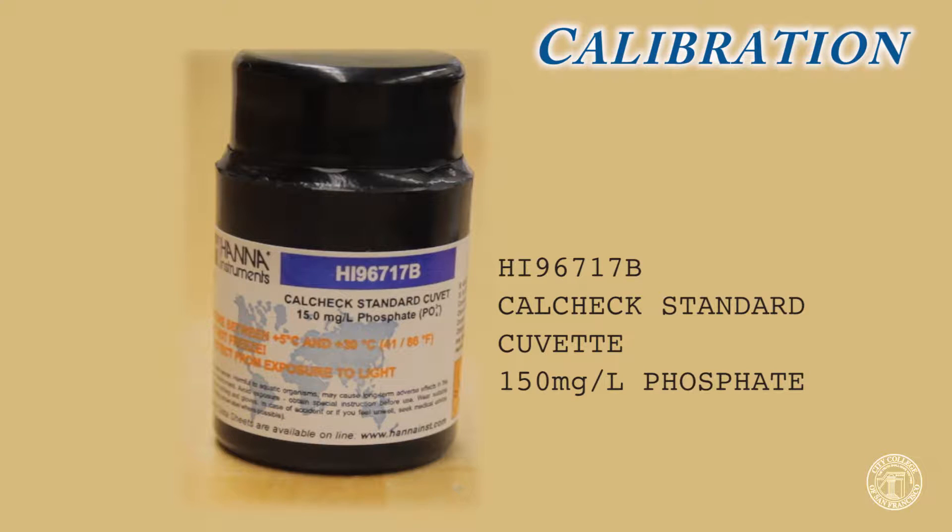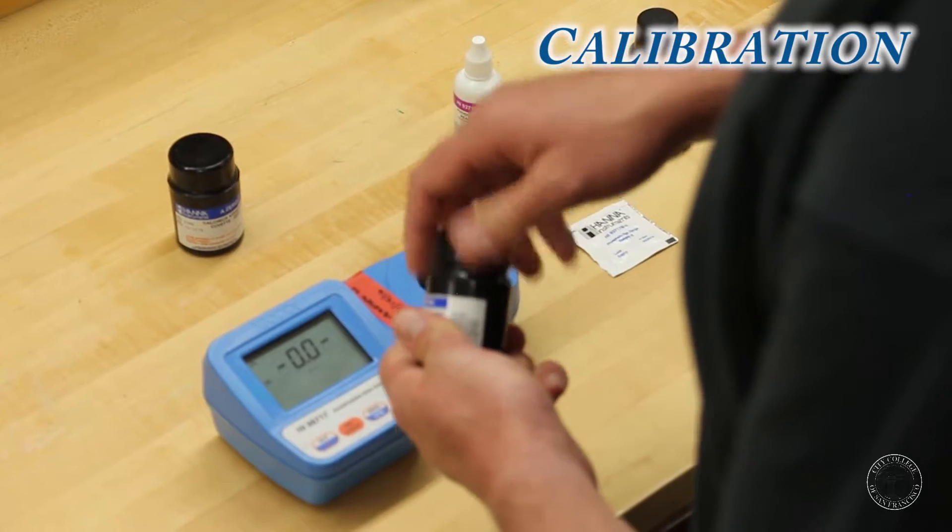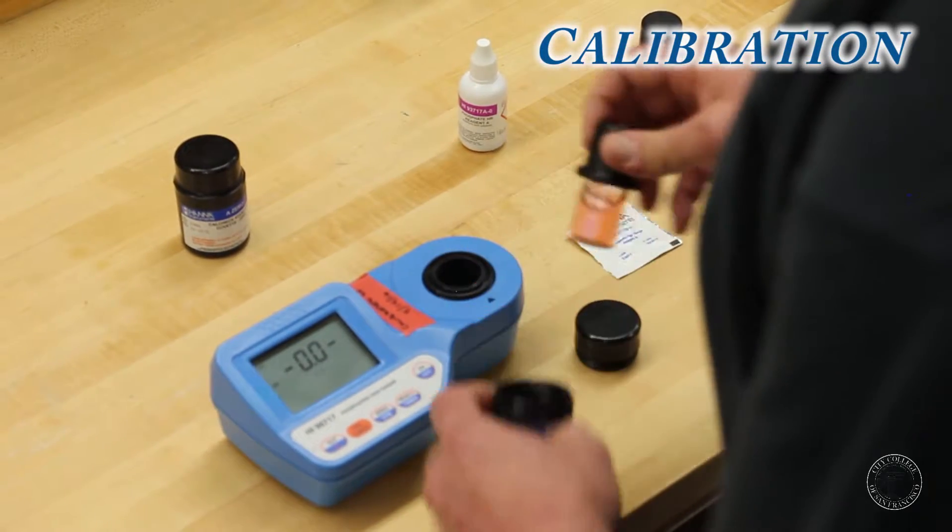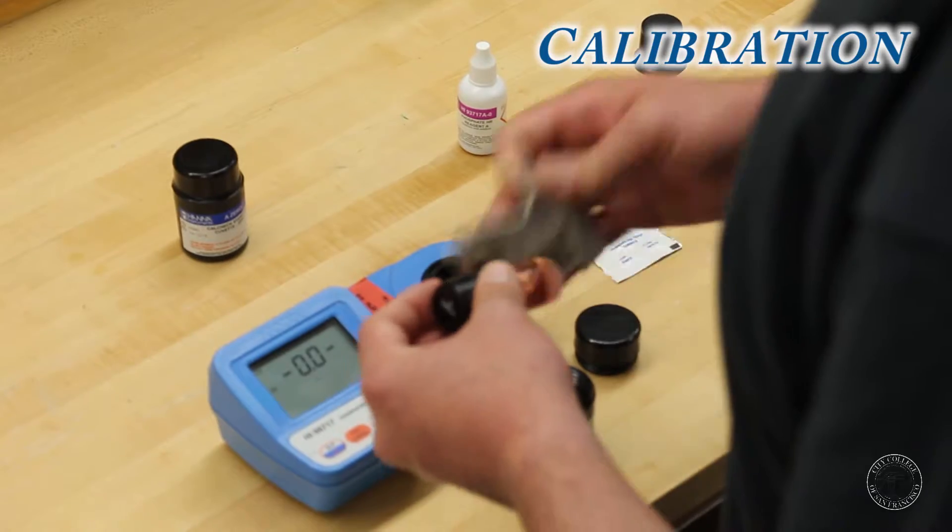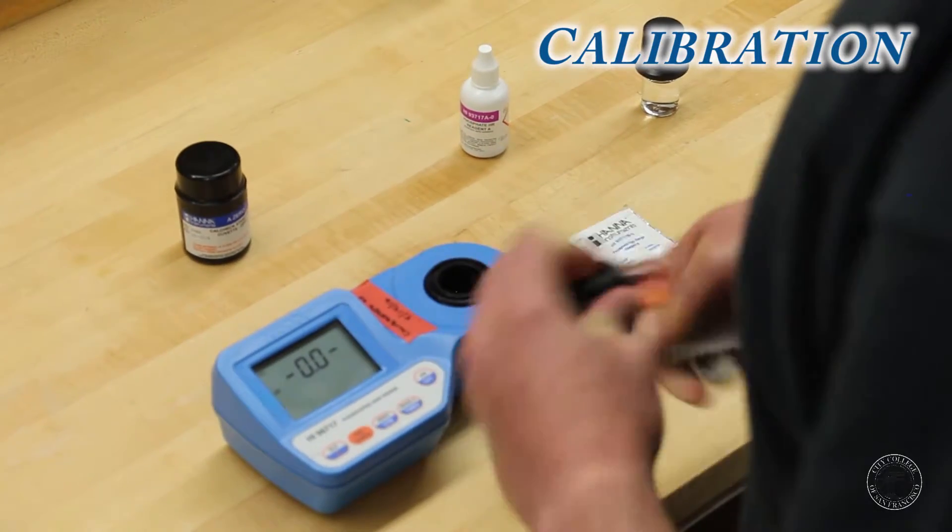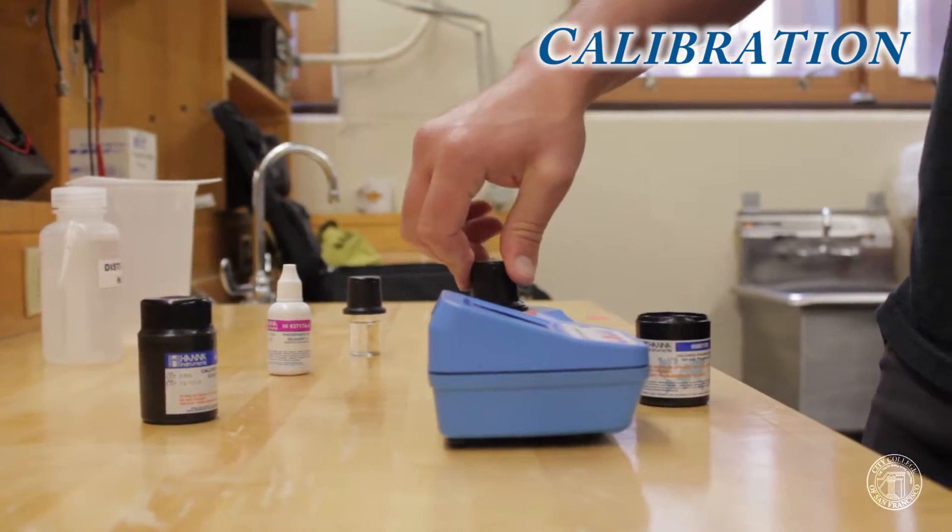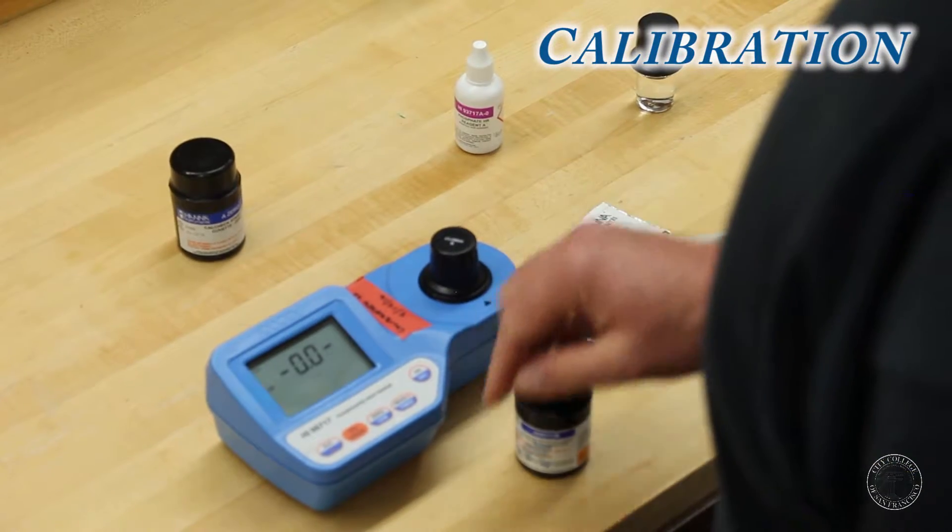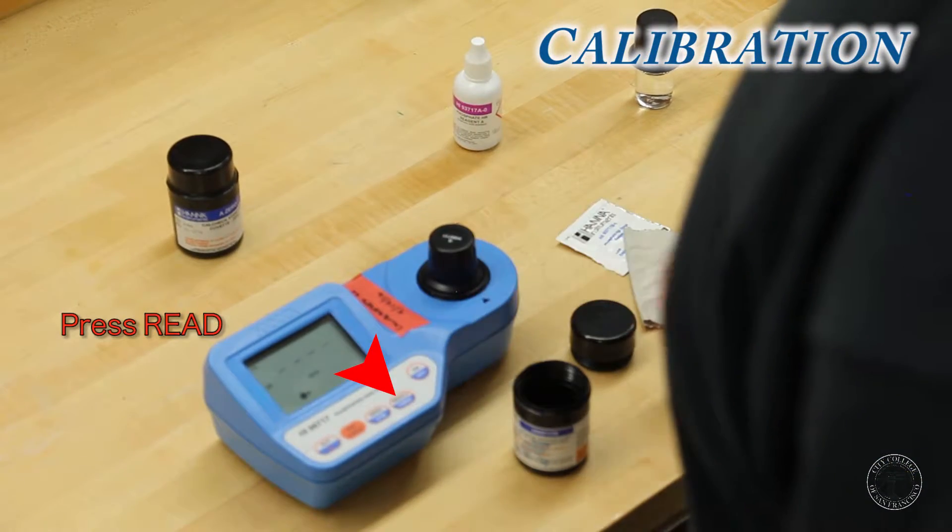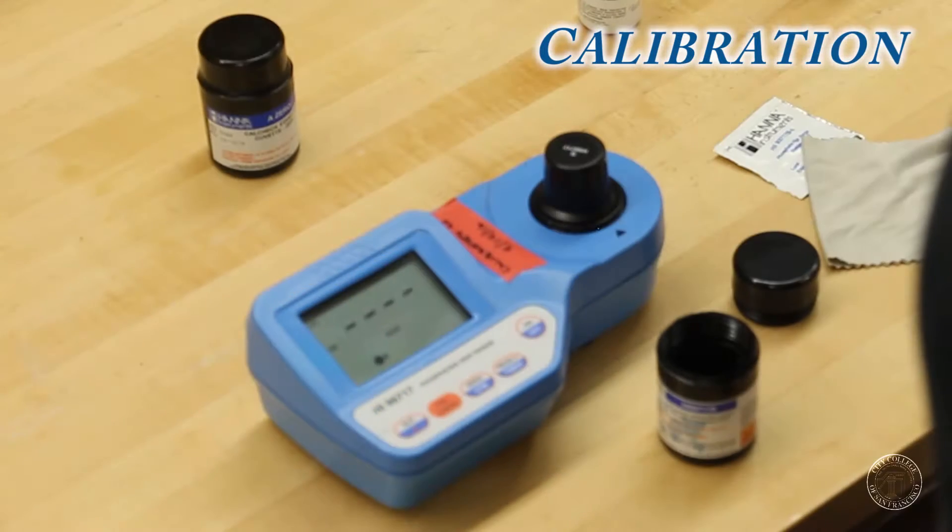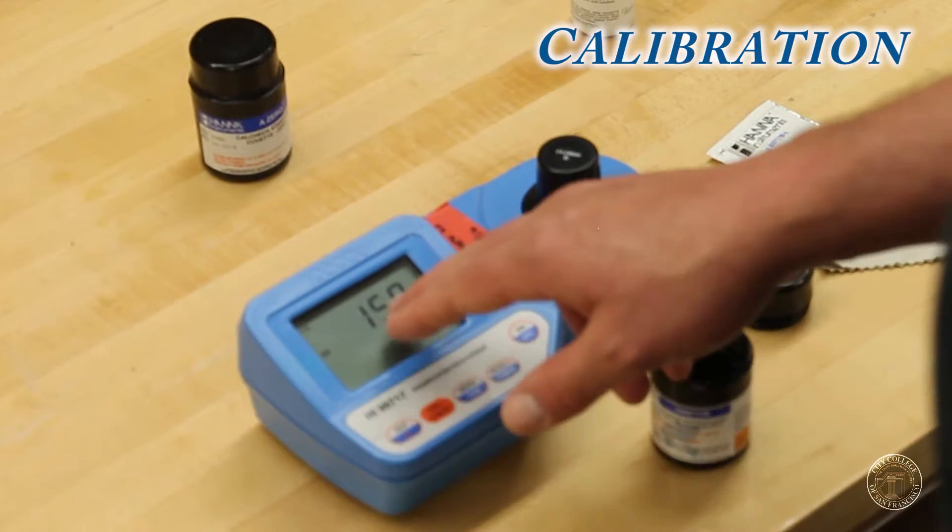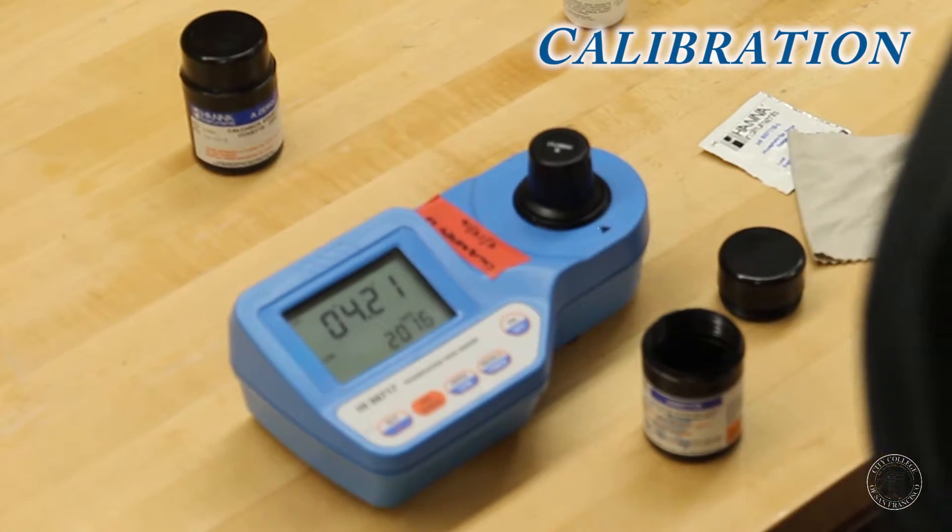Now using our CalCheck standard for dissolved phosphates, it's set to be 15 milligrams per liter as the standard. Wipe the cuvette, put it in until it clicks and the arrows are lined up. Then we simply click read and wait for the lamp to read the standard. And the standard reads at 15 exactly as it should.